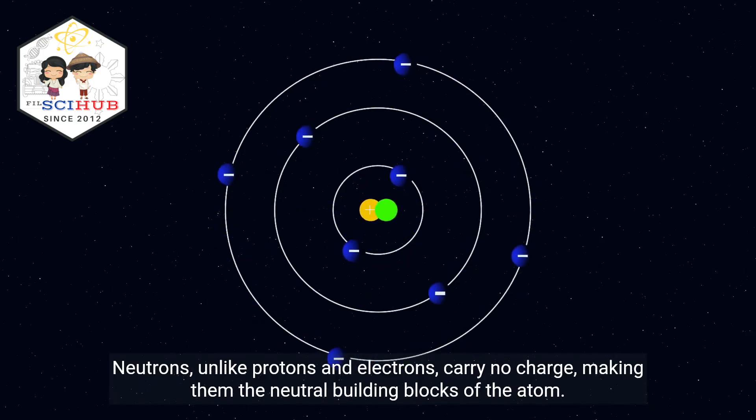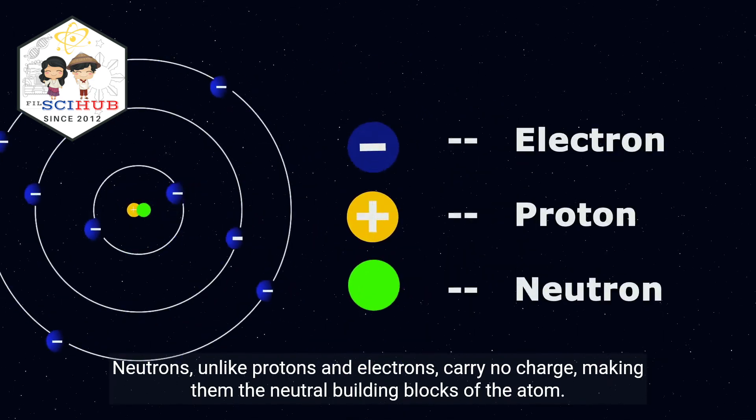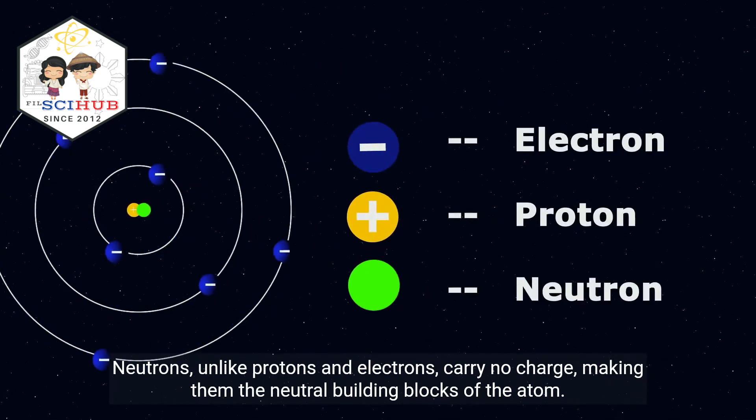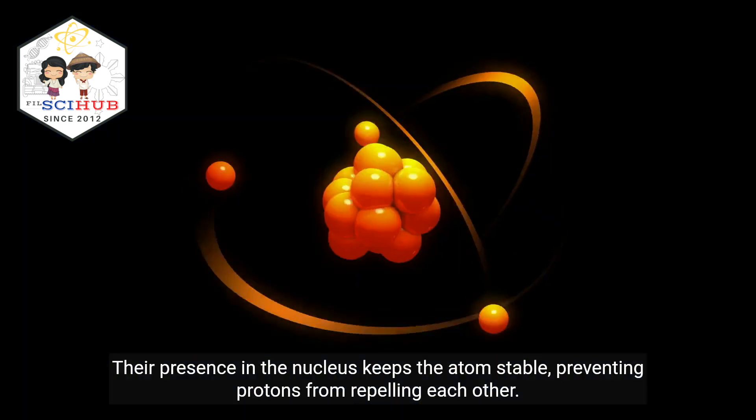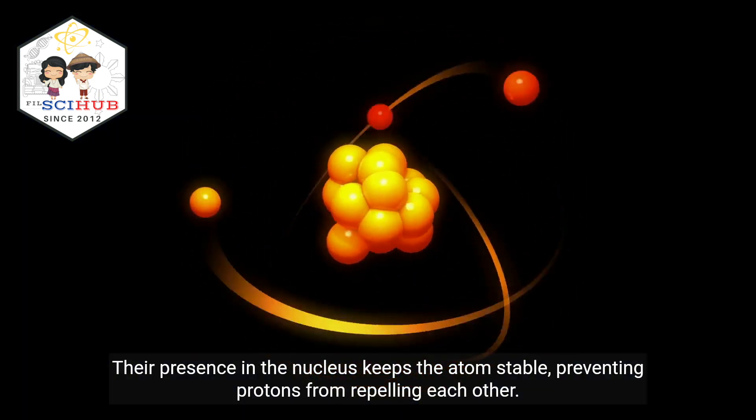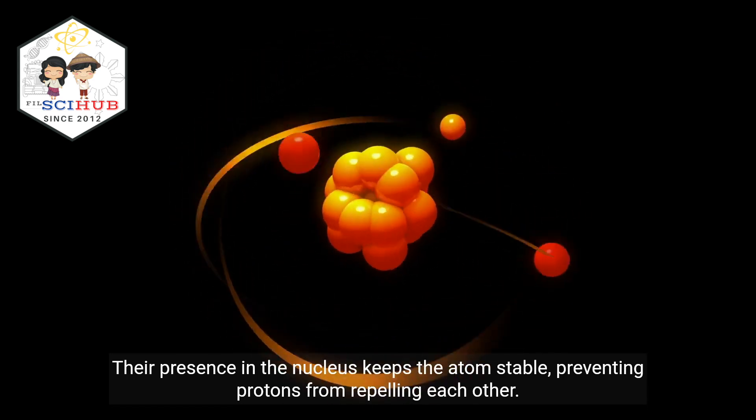Neutrons, unlike protons and electrons, carry no charge, making them the neutral building blocks of the atom. Their presence in the nucleus keeps the atom stable, preventing protons from repelling each other.